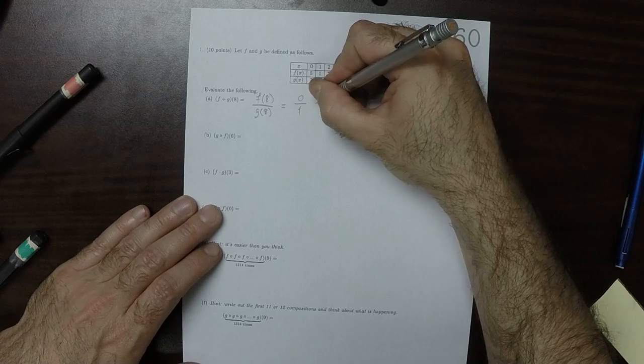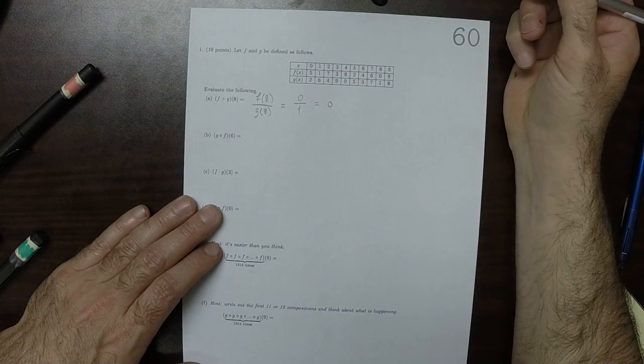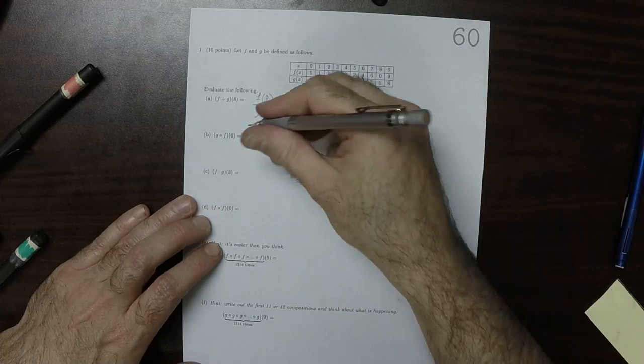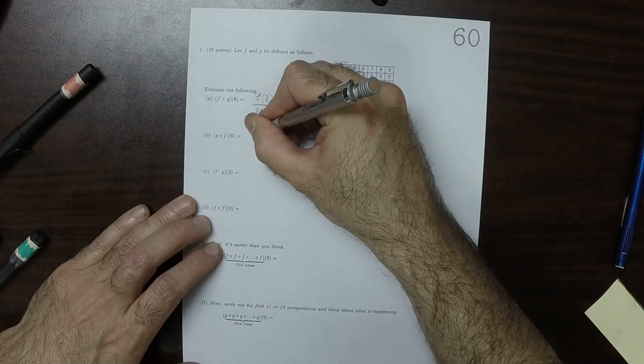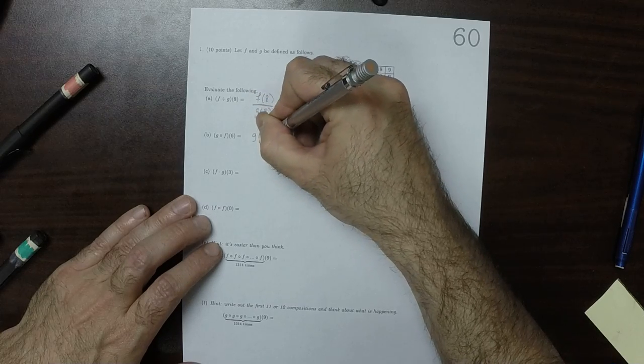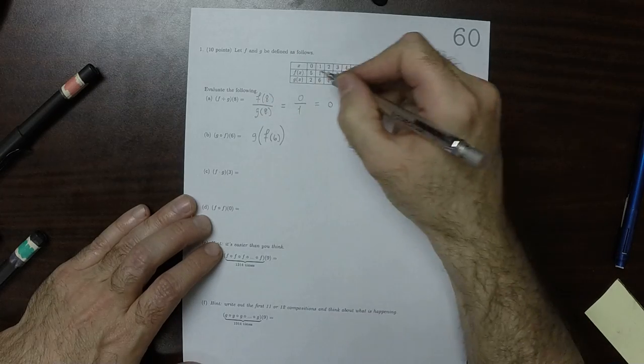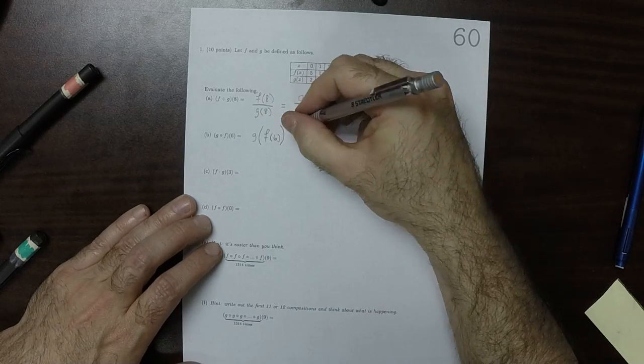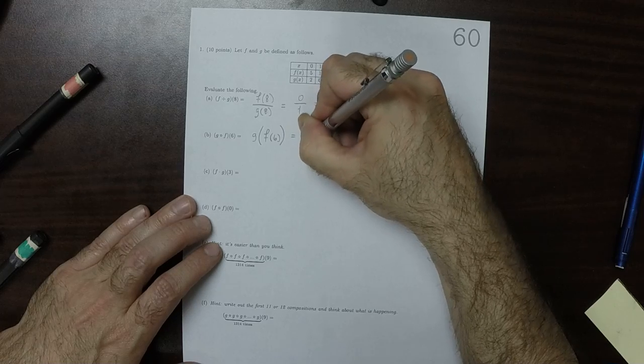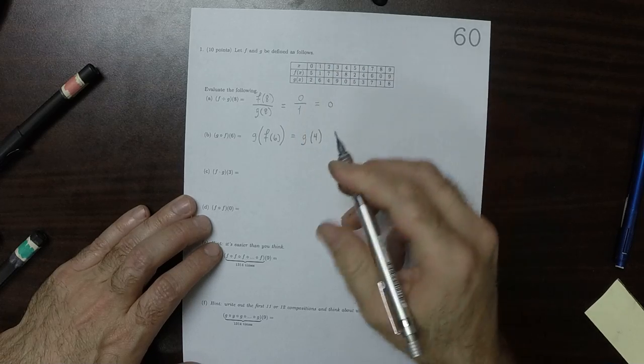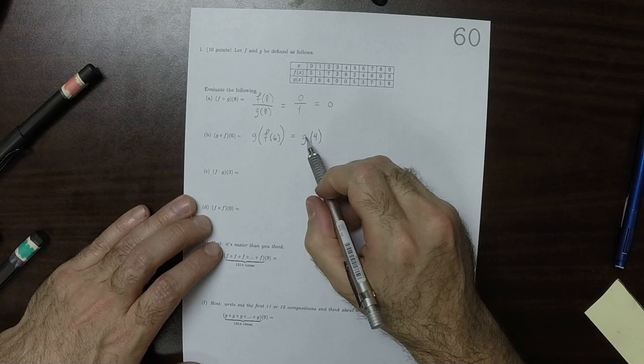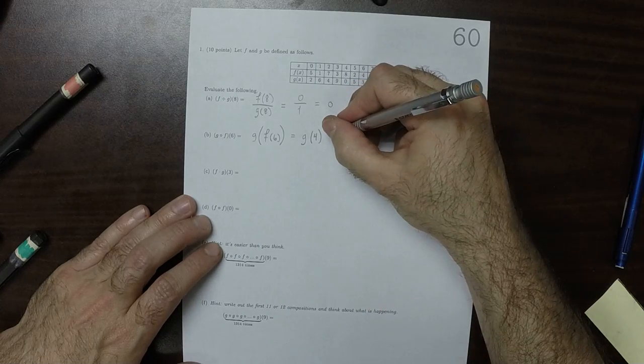For this one, by definition this is g evaluated at f of 6. So f evaluated at 6 is 4, so this is g evaluated at 4, and then g evaluated at 4 is 0.